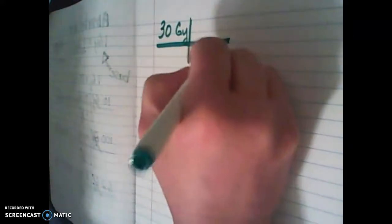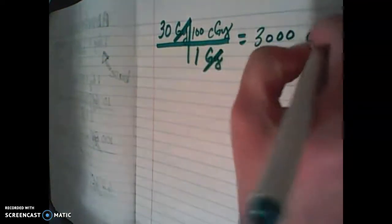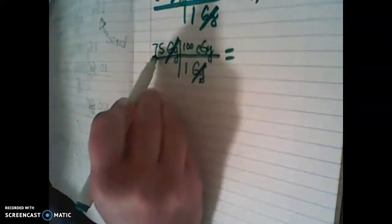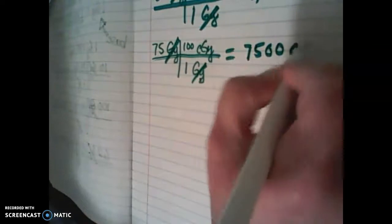Let's try another one. We're given 30 gray and we want to know how many centigray. We'll line it up again — we're going from grays, so here we put gray on the bottom and we're looking for centigray, so there goes our 100. We mark out our grays, they cancel out, and we're left with 30 times 100 — that's 3,000 centigray. If we have 75 gray and want to know how many centigray, we use our conversion factor: 1 gray equals 100 centigray. Our units cancel out. 75 times 100, divided by 1, is 7,500 centigray.